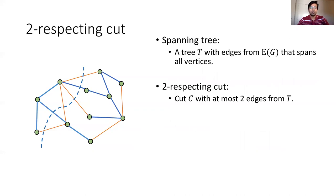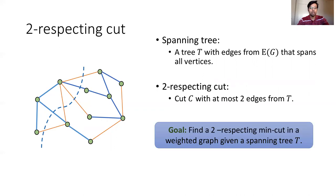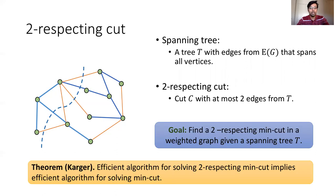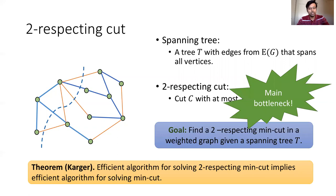Karger's subroutine is called two respecting min cut. The goal of this subroutine is to output, with respect to a given spanning tree T, the minimum cut which tree respects T. Karger showed that if one can efficiently solve the two respecting min cut problem, then there is an efficient algorithm for solving min cut. Karger showed it for sequential setting, more or less the same theorem also holds for all other settings that we have mentioned. Coming up with an efficient algorithm for the minimum two respecting cut is the hard part of Karger's framework, or the main bottleneck.